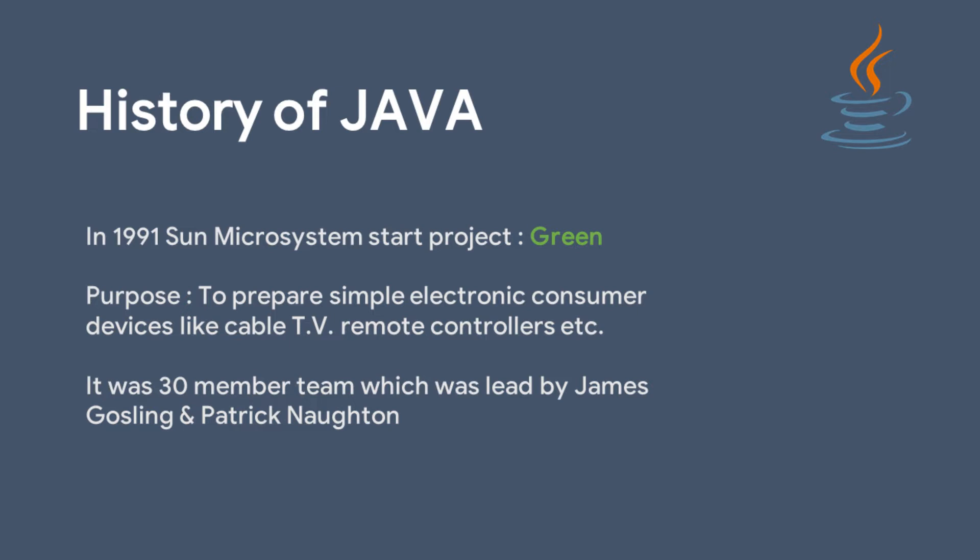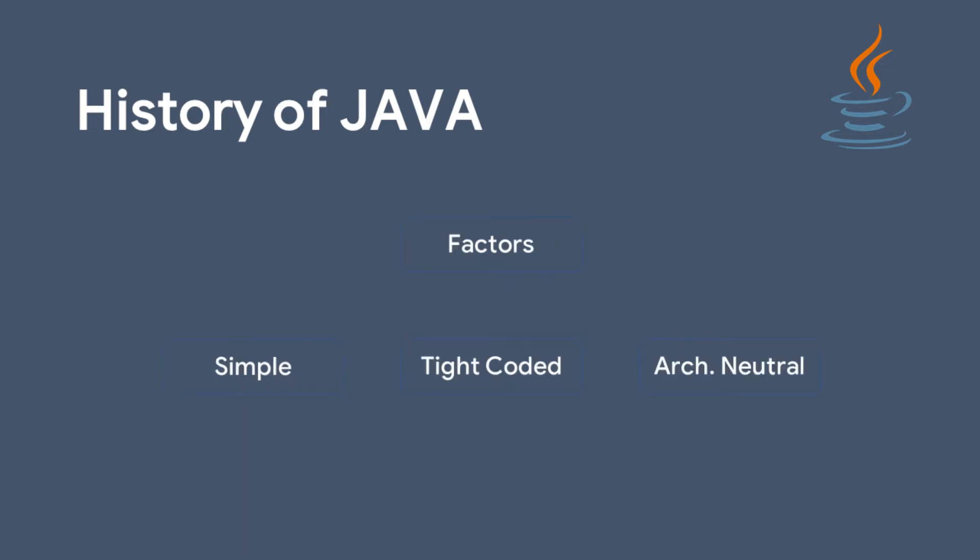Sun Microsystems prepared a 30-member team which was led by James Gosling and Patrick Norton. The project they started was named 'Green'. They said the new programming language should have three factors: it should be a simple programming language, it should be a tight coded programming language, and it should be an architectural neutral programming language.